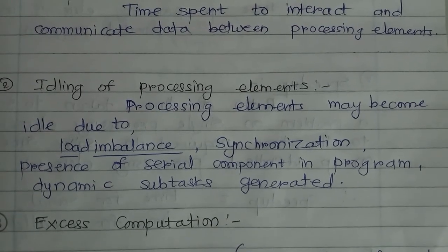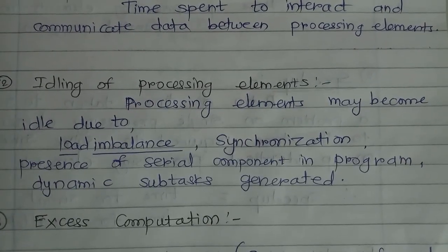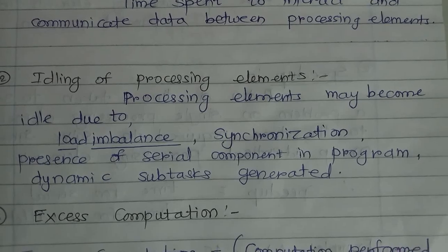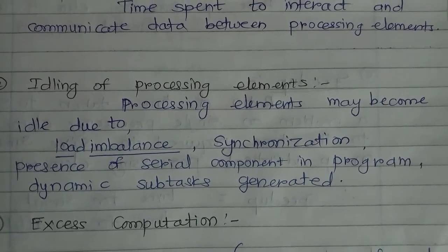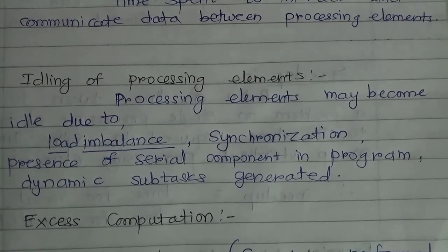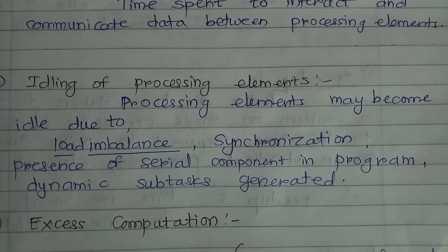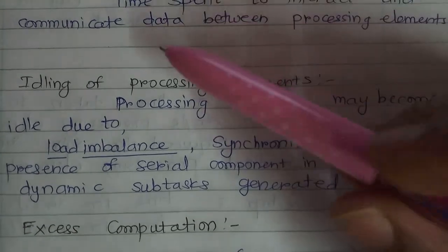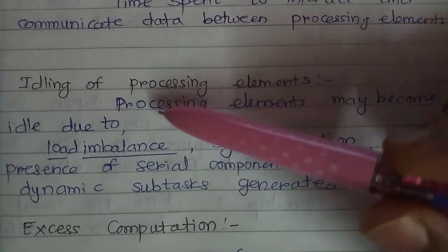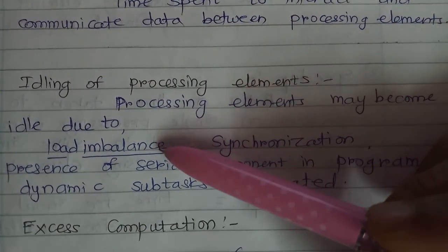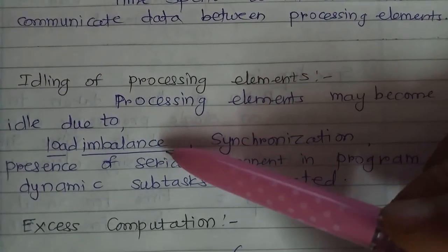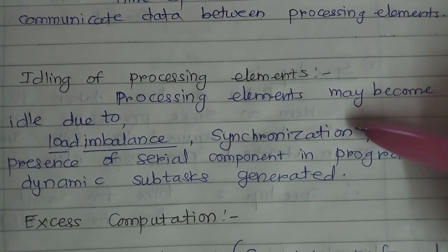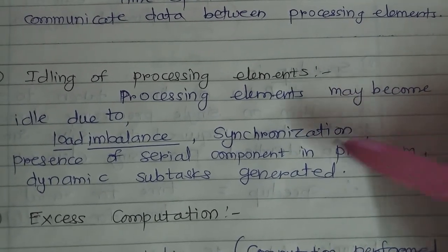The second source is idling of processing elements. Different factors contribute to this idling. Load imbalance means there may be different amounts of load for each processing element, so some may complete their task earlier while others require more time. Synchronization among processing elements is also a contributing factor.